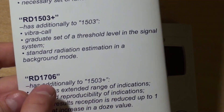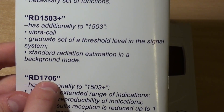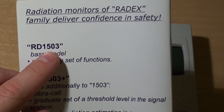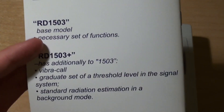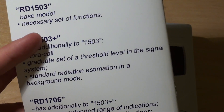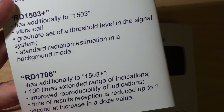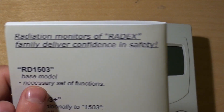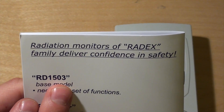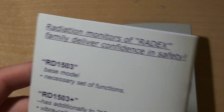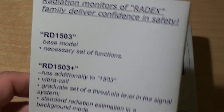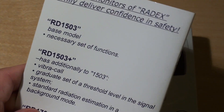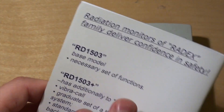This is the Radex 1706 Geiger counter. There is also a 1503 model and a 1503 Plus model. The Plus model software is like the 1706, and the normal 1503 — not the Plus version — is a little bit different and lacks many features, but you can use this video to learn the basic operation of the 1503.